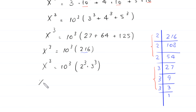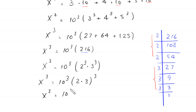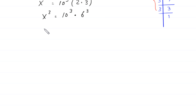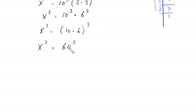Next, x cubed is equal to 10 cubed times 2 cubed times 3 cubed, which becomes 10 cubed times the quantity 2 times 3, whole cubed. And 2 times 3 is 6, so x cubed is equal to 10 cubed times 6 cubed, which becomes 10 times 6, whole cubed — that is 60 cubed. Moving 60 cubed to the left hand side, this becomes x cubed minus 60 cubed is equal to 0.